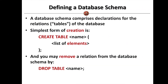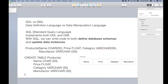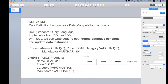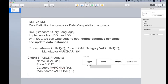Besides generating or creating a table, we can also actually delete a table in our database system. It's a requirement to remove a relation from our design. We can take the products table as an example. If we run a code like this, the system will generate a blank table.